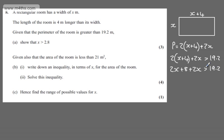I'm going to subtract 8 from both sides. So on the left, we're going to have 4x is greater than 11.2. Dividing both sides of the inequality by 4, x is going to be greater than 2.8 as required. So that's part A done for 3 marks.